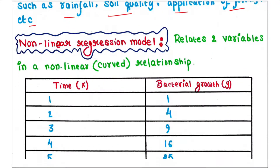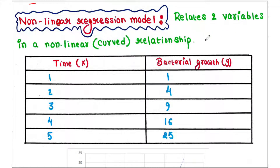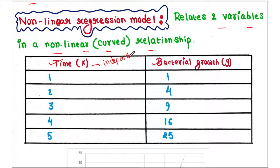Now let's talk about the non-linear regression model. This model relates two variables in a non-linear or curved relationship. For example, the relationship between time and bacterial growth can be described using a non-linear regression model. Time is the independent variable and bacterial growth is the dependent variable.